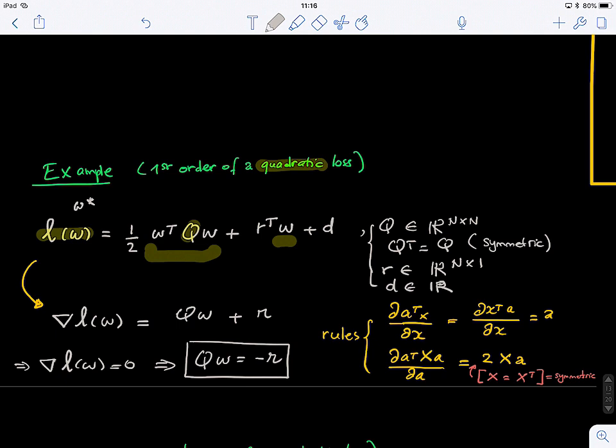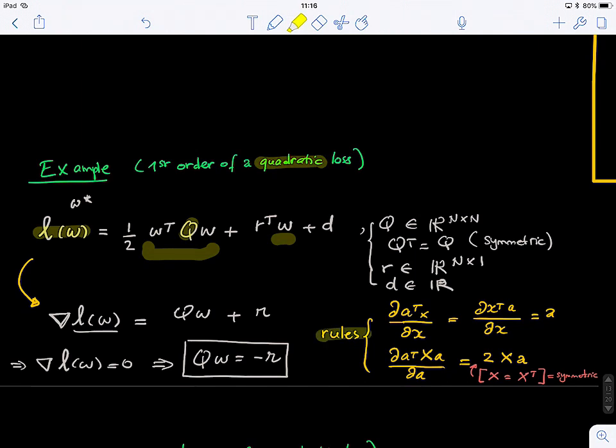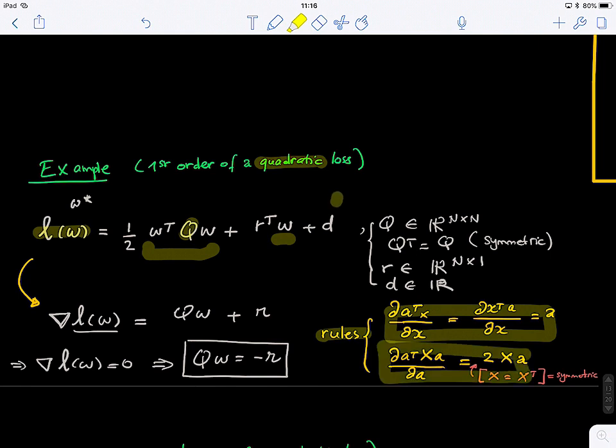Here we're computing the gradient of our loss function, and by applying those rules. You don't need to know all those rules by heart. There are many rules of differentiating quadratic forms, multiplications of matrices and vectors. But these are two forms that you need to know for this simple quadratic form. Because we have seen this, it's similar to Bayes classifier. We're going to keep seeing this over and over again across the lectures, so please keep in mind those rules.